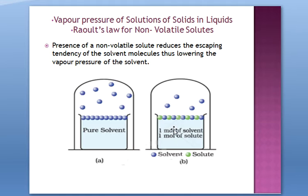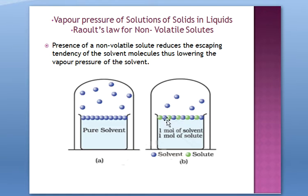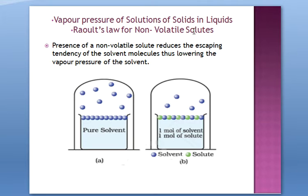Why does this happen? Because in the presence of a non-volatile solute, the escaping tendency of even the solvent molecules is reduced. In pure solvent, the solvent escapes readily into the vapor phase. But when solute molecules occupy the surface, they reduce the escaping capacity of the solvent. Because of this, the number of vapors is less, and therefore it has a direct impact on vapor pressure. When you add a non-volatile solute to a liquid, its vapor pressure will decrease.